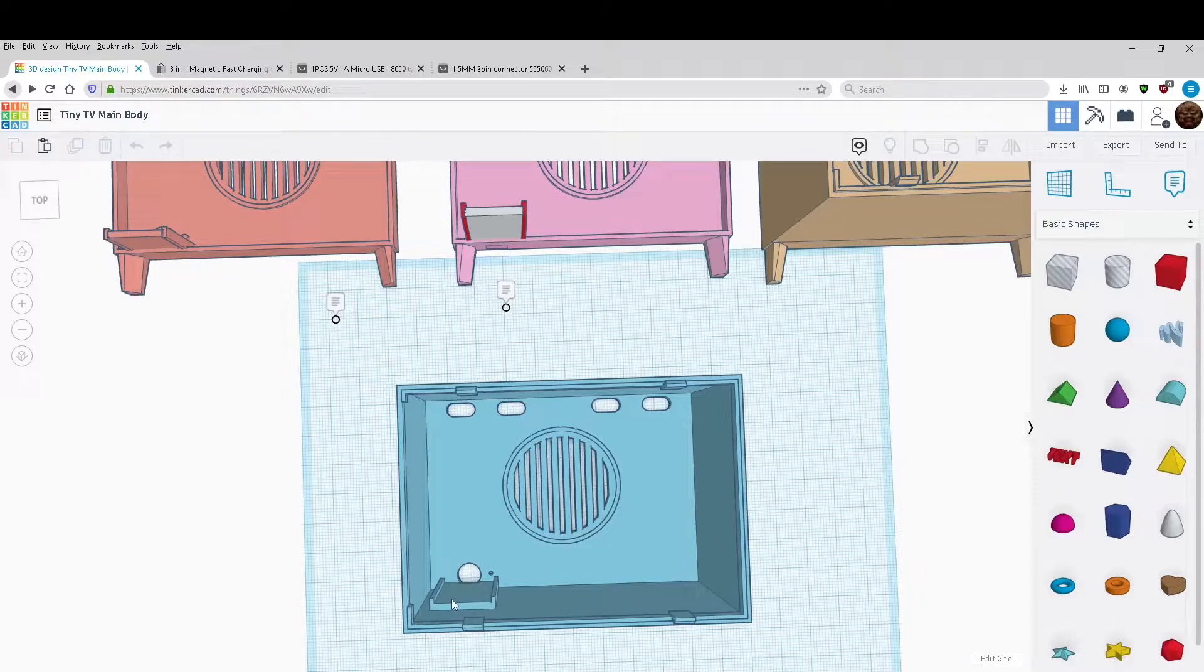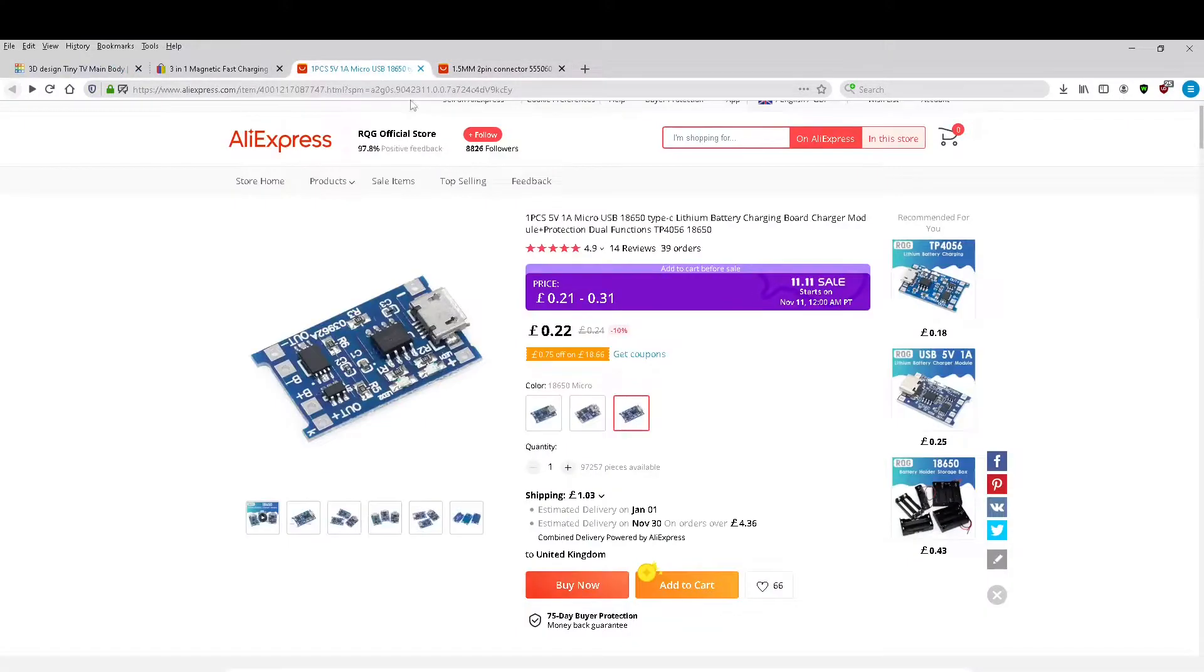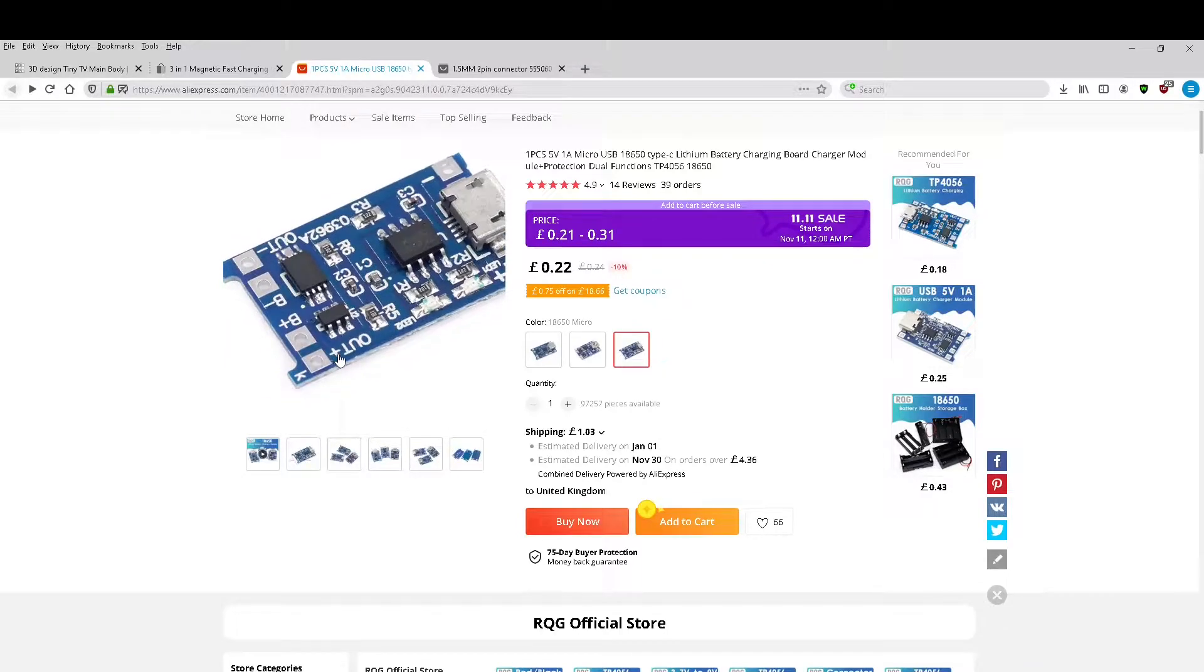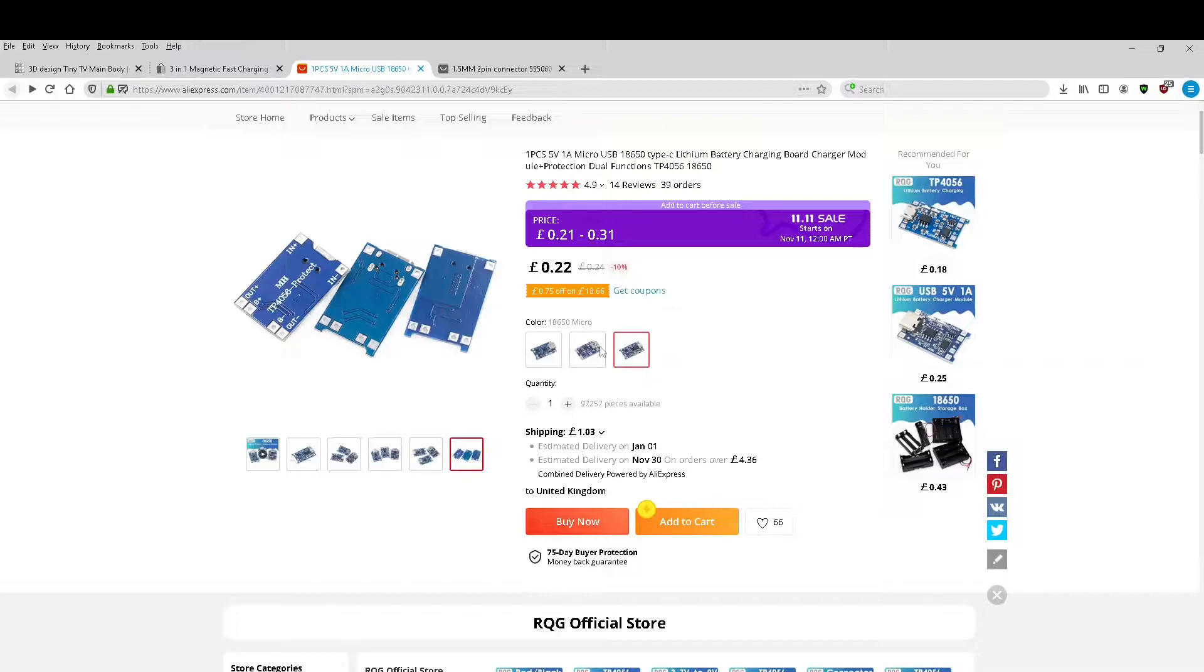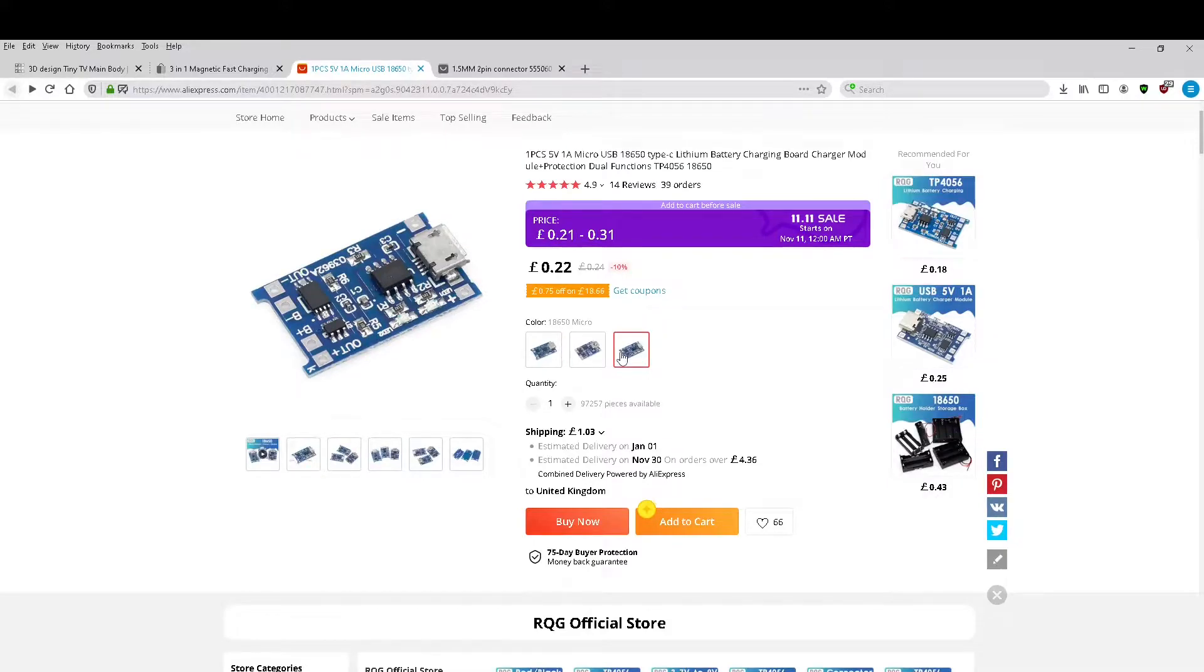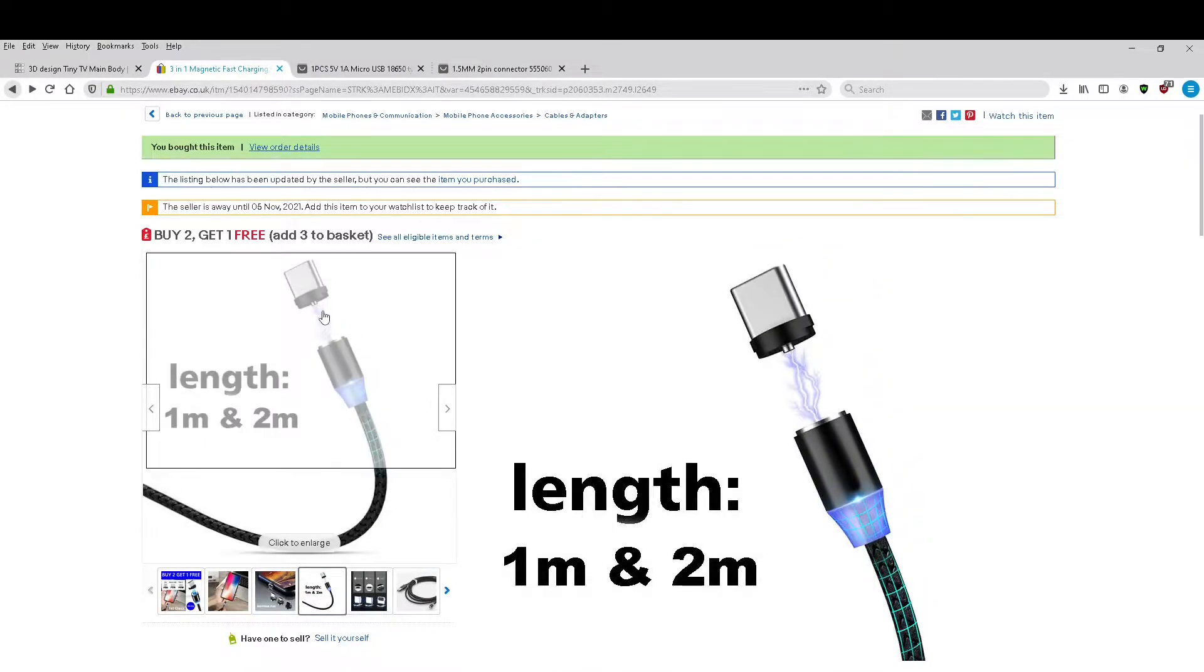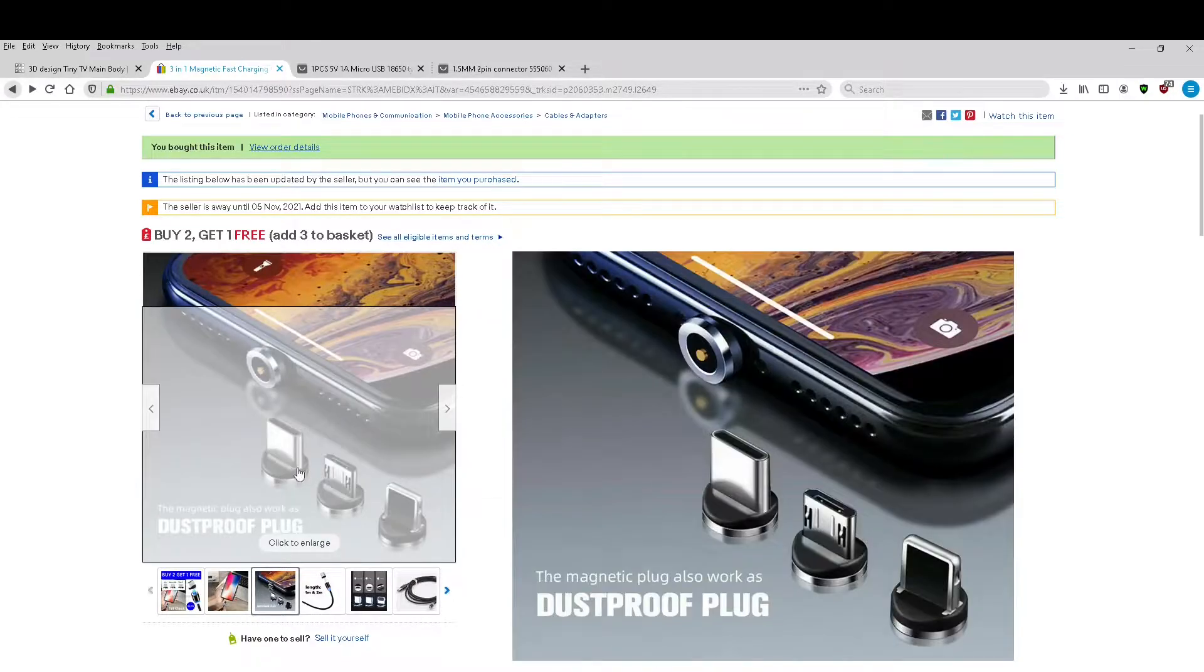I've gone for the very standard 18650 charging board. These things have been around for a long time and they're reliable and cheap. I got mine from Aliexpress but they're pretty much the same wherever you get them. I went for the micro USB type, though most people these days would go for the USB-C type, but because I'm plugging in an adapter it doesn't really matter. The magnetic cable I used I got from eBay.